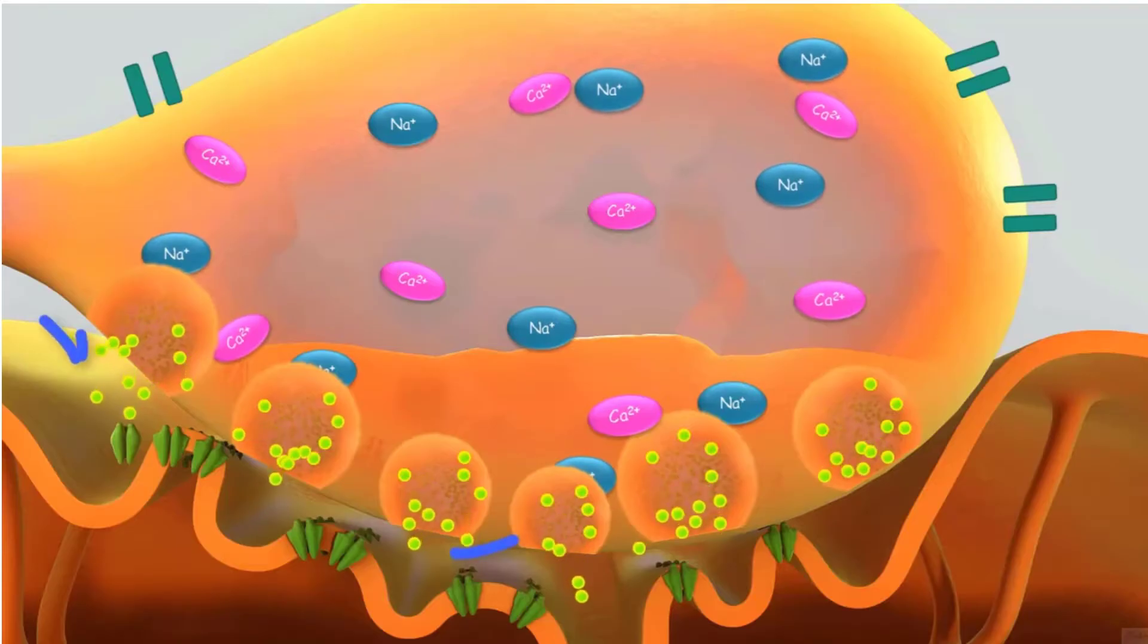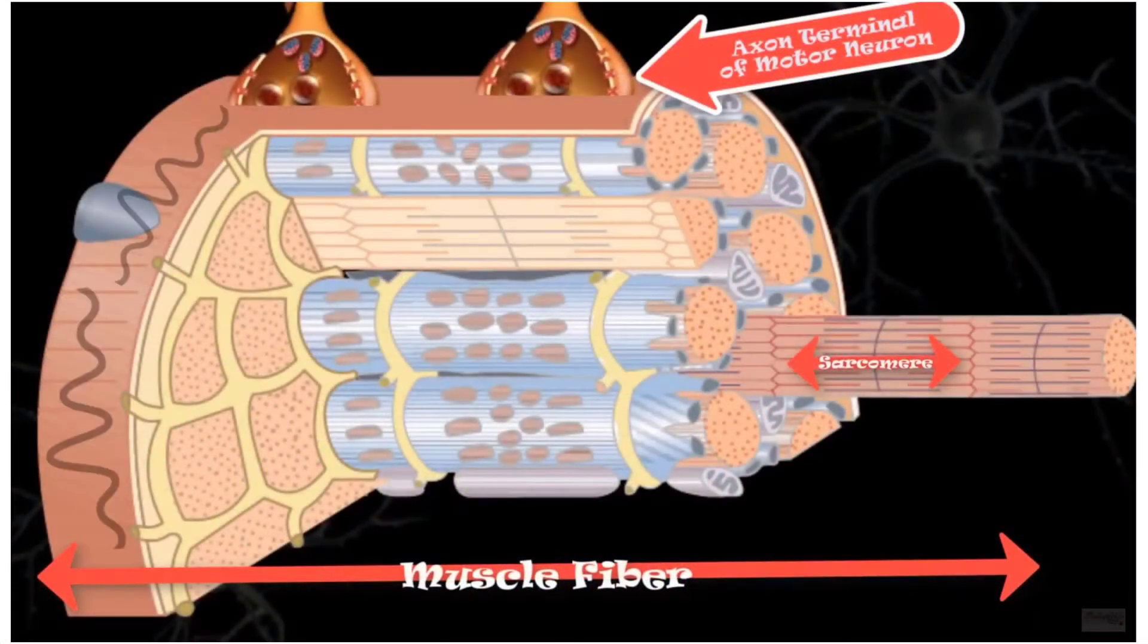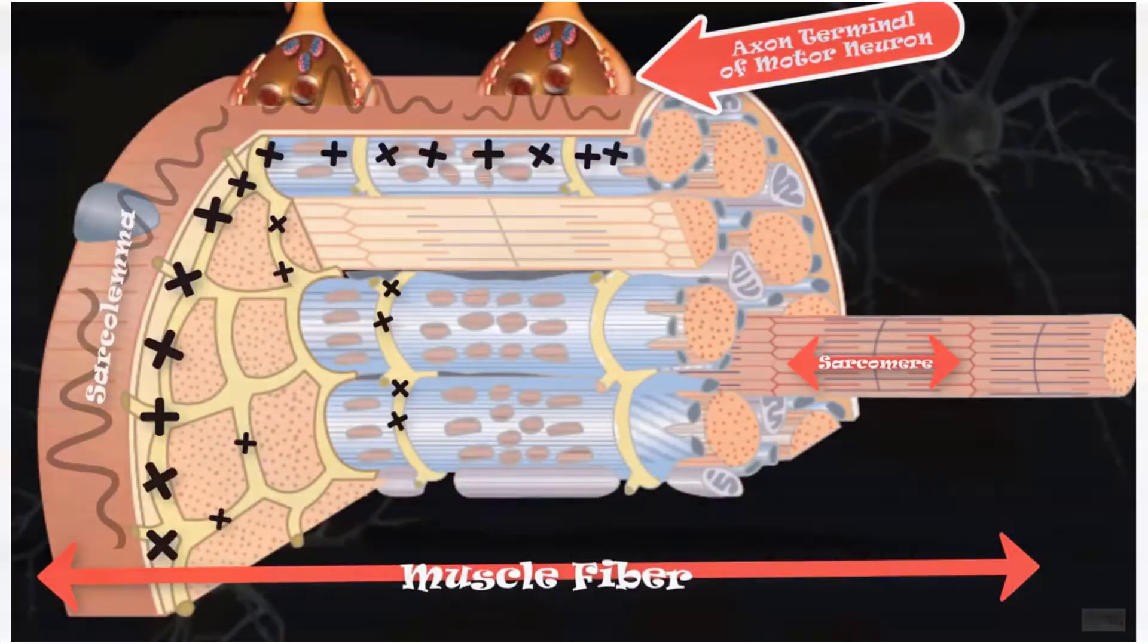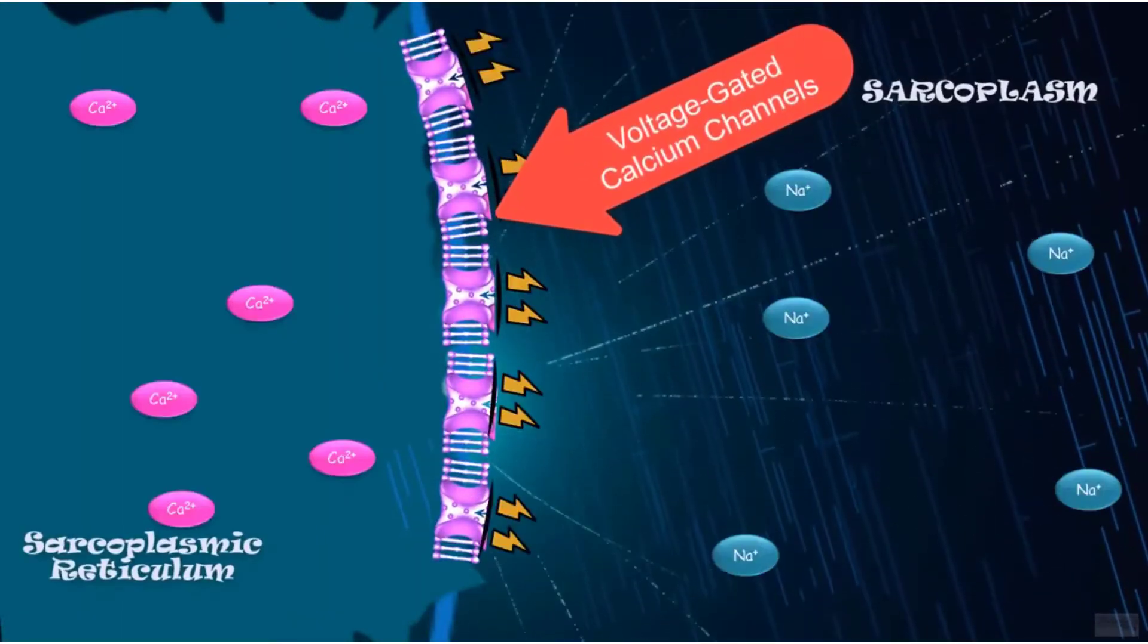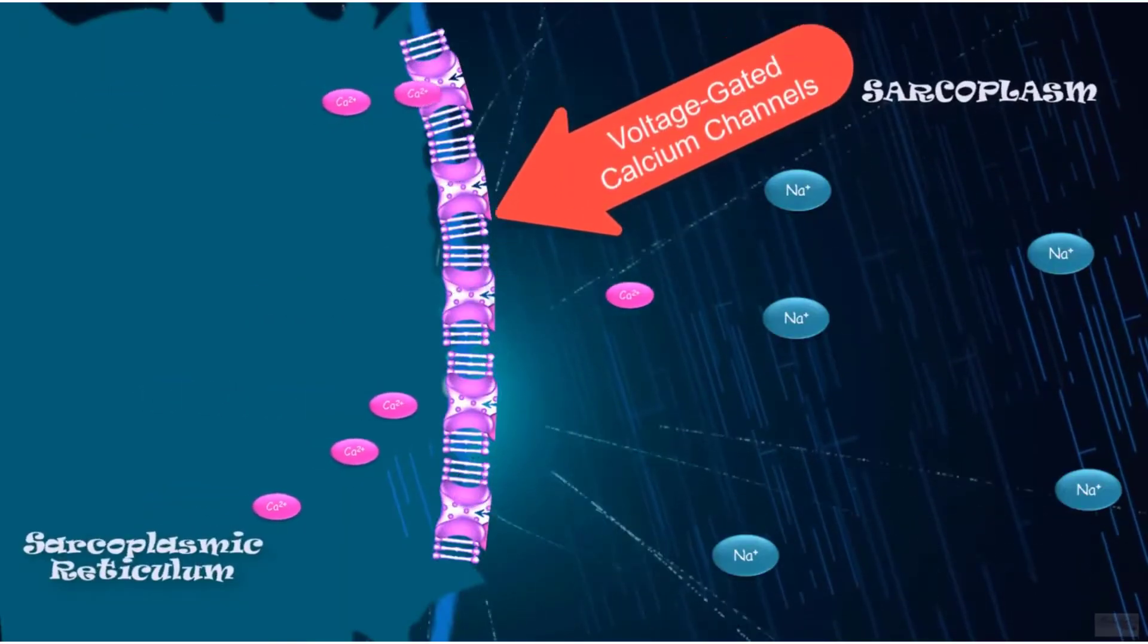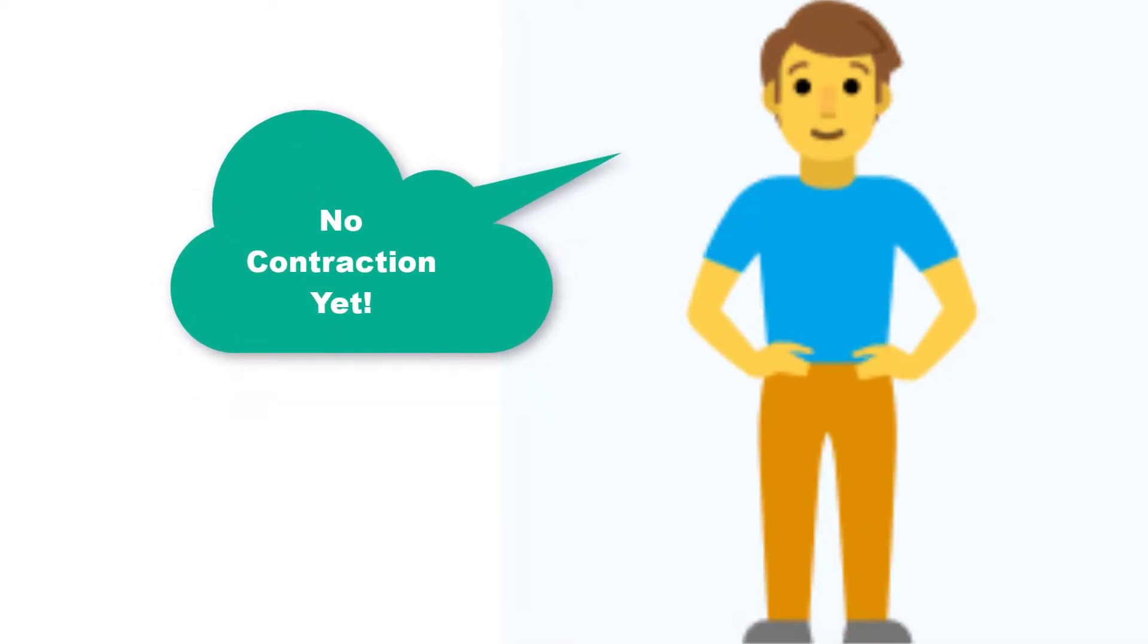During the latent period, the action potential is being propagated along the sarcolemma and calcium ions are released from the sarcoplasmic reticulum. However, contraction has not yet occurred.